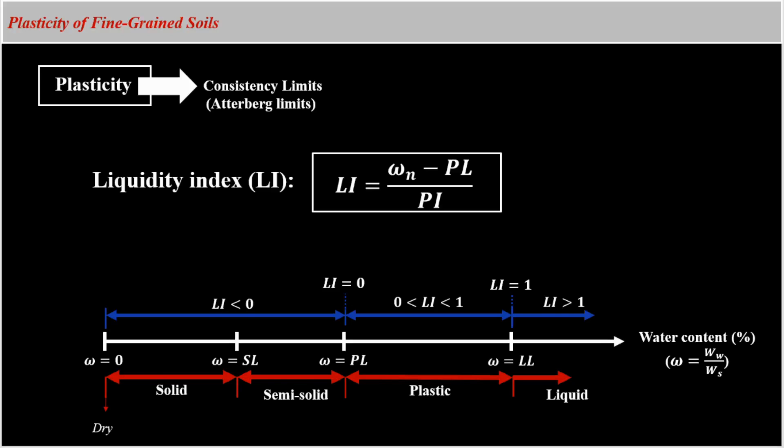And lastly, liquidity index. Simply speaking, liquidity index helps us to compare the natural water content of a soil sample to its consistency limits. For example, when water content of a soil is equal to its plastic limit, as you can see from this equation, the liquidity index of this soil sample is equal to zero. When water content of a soil sample is equal to its liquid limit, the liquidity index of that sample will be equal to one. And similarly, liquidity index can have any other values.